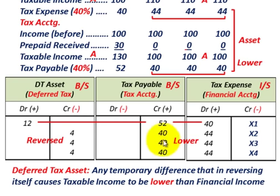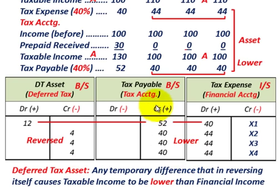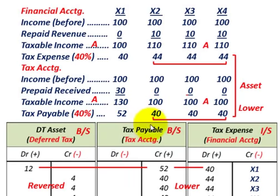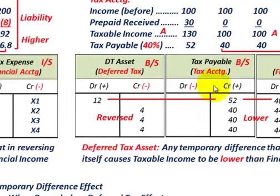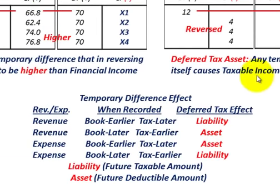Tax payable of $40,000 is lower than the tax expense of $44,000 — that's our financial income figure. When dealing with these problems, lay it out and make your comparison between financial income and tax income, or tax accounting versus financial accounting. Let's summarize.